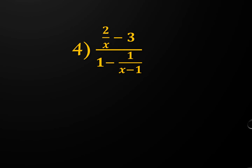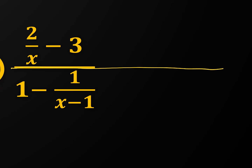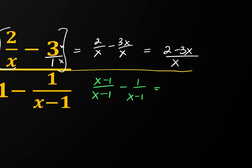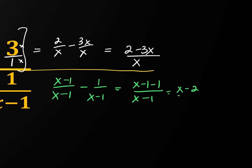First method for example 4: separate the numerator. To combine 2 over x minus 3 into one fraction, give 3 the same denominator x by multiplying: this becomes 2 over x minus 3x over x, which is (2 - 3x) over x. For the denominator, 1 must become x over (x-1) over (x-1), minus 1 over (x-1), giving (x-1-1) over (x-1), or (x-2) over (x-1).